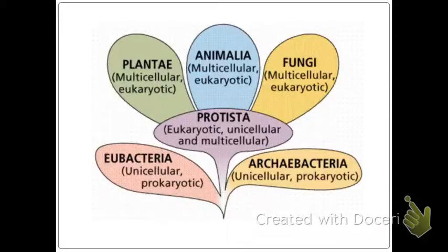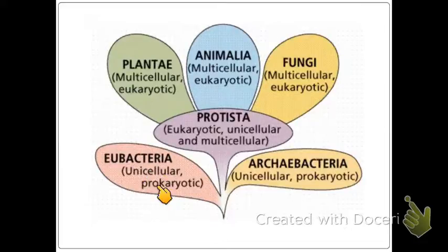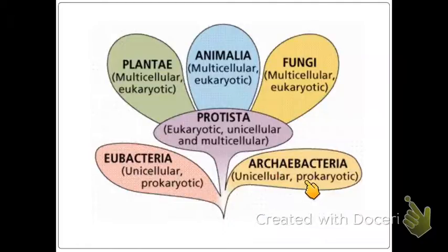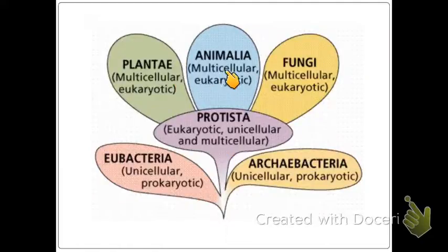Here's just another example of what it looks like. Eubacteria is unicellular and prokaryotic. Archaeobacteria is unicellular and prokaryotic. Protists are eukaryotic, and they can be unicellular and multicellular. Plants, animals, and fungus are all multicellular.